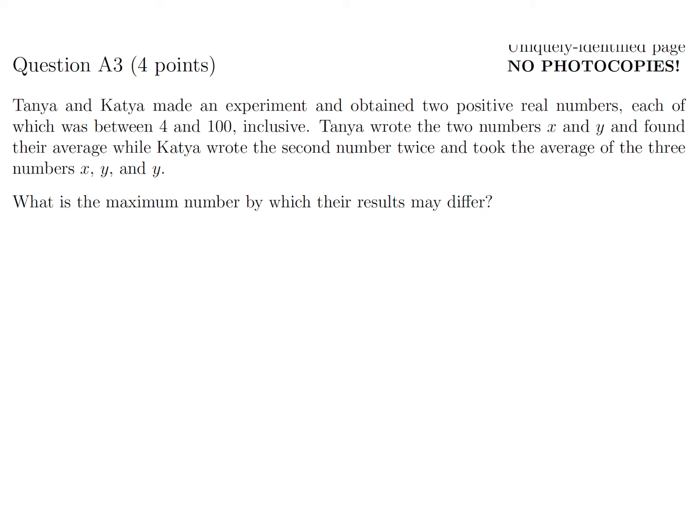Tanya wrote the numbers x and y and found their average, while Katya wrote the second number twice and took the average of the three numbers x, y, and y.